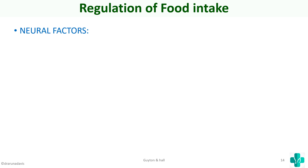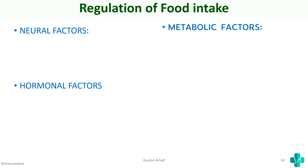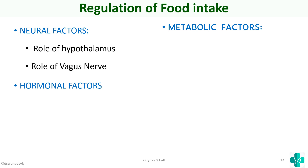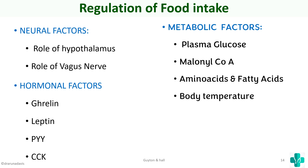In summary, regulation of food intake involves neural factors, hormonal factors, and metabolic factors. Neural factors include the role of the hypothalamus and vagus nerve. Hormonal factors include ghrelin, leptin, PYY, and CCK. Metabolic factors include plasma glucose, malonyl-CoA, amino acids, and body temperature. This is an important short note topic for MBBS.